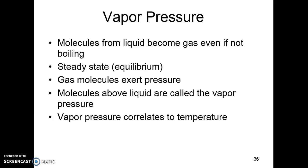Molecules from a liquid can become a gas even if it's not boiling — there's always going to be some escaping. The amount that escape depends on the attractive force in the liquid and the temperature. There's always a little bit of gas above a liquid, and that gas exerts a pressure due to collisions. Because there are always molecules above a liquid exerting pressure, we say that liquids have vapor pressure.